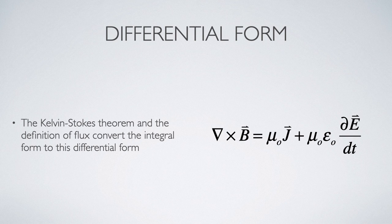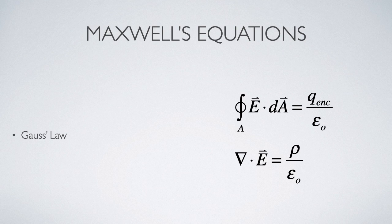So let's summarize the four things that we've learned about electric and magnetic fields throughout the semester. The first thing we learned was Gauss's law, which related the flux through a closed surface to the charge enclosed. We were able to apply the divergence theorem to get the differential form, so the divergence of the electric field is related to the volume charge density in that location.